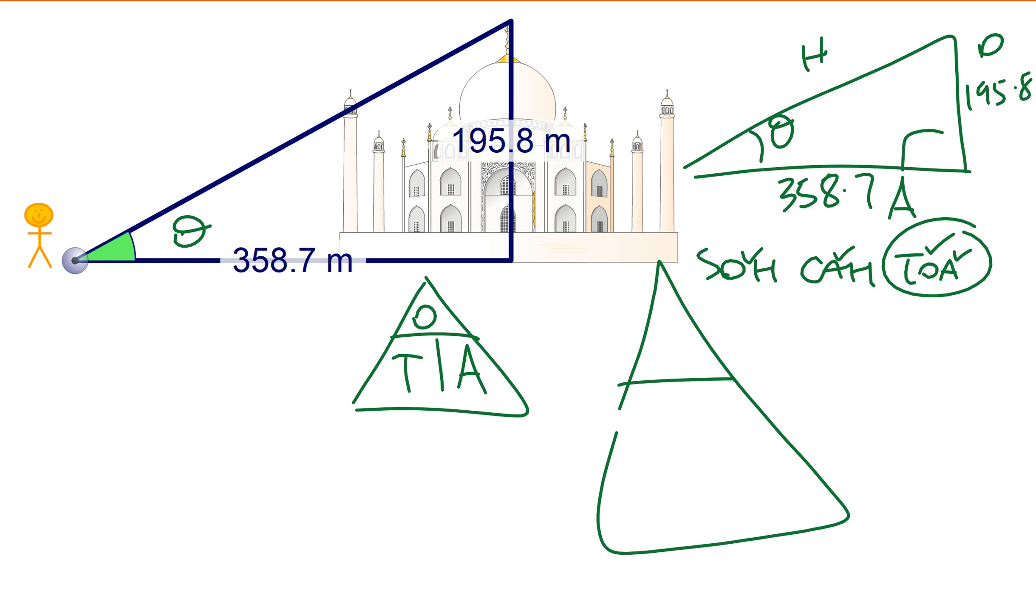Big triangle, big triangle. So the tan of the angle is going to be 195.8 over 358.7. So my angle is going to be tangent minus one.